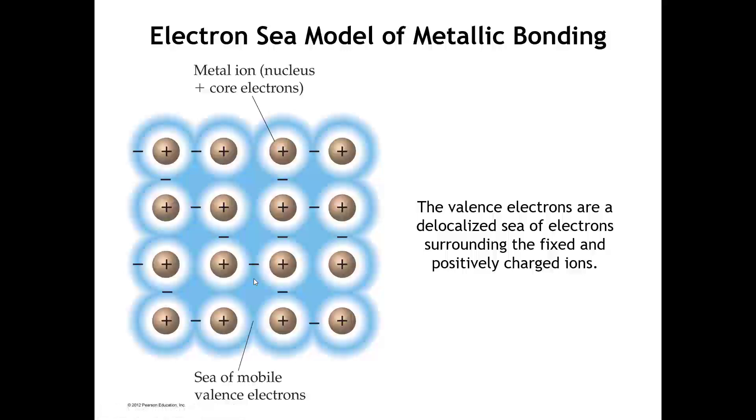And the thing that makes it special, different than, say, covalent network solids or ionic solids, is that if we put some kind of external force that's going to push the electrons one way or the other, then they can move in response to that force. If we apply an electric field gradient, then the electrons move away from the negative potential and toward the positive potential, and that is the conduction of electricity. If we put a thermal gradient across the metal, we have a hot end and a cold end. The electrons at the hot end have more kinetic energy, and they diffuse and move down to the cold end, and that carries heat with them when they go.